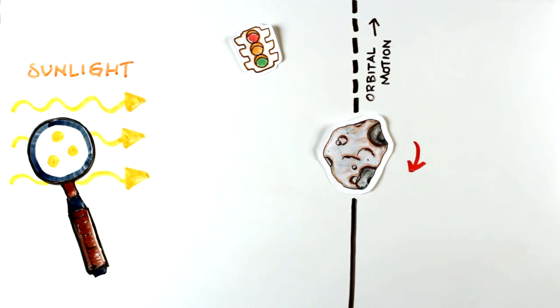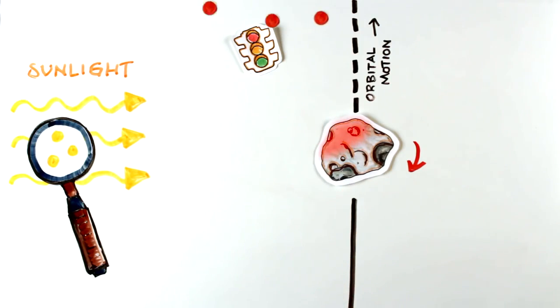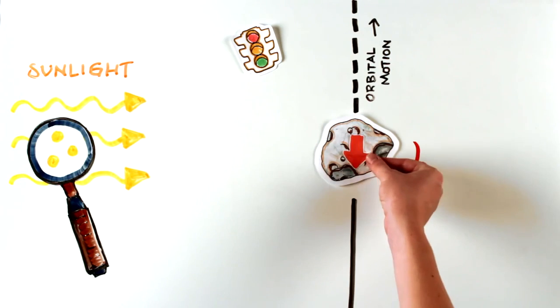If the asteroid is spinning such that the warmest spot is slightly in front, the recoil force will be backwards and the asteroid will slow down a bit, like a car hitting the brakes.